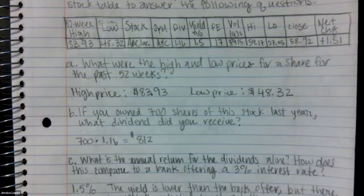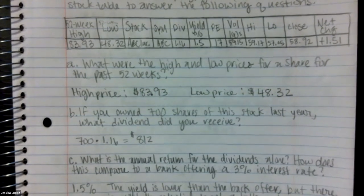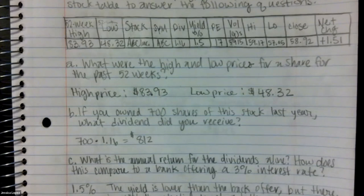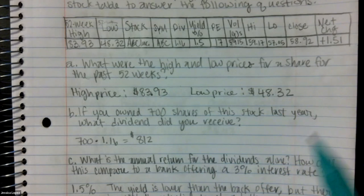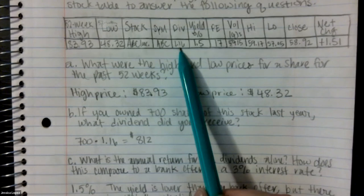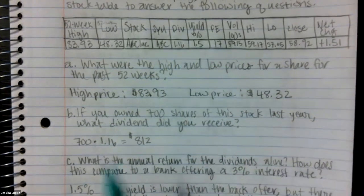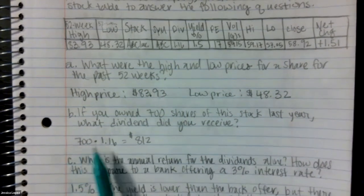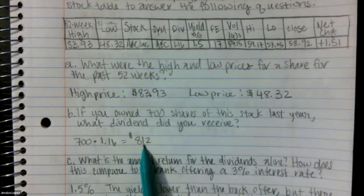For part B, it says if you own 700 shares of this stock last year, what dividend did you receive? So you go over to the dividend area — this is the multiplier for however many shares you have. Since I have 700 shares, I'm going to do 700 times 1.16, which turned out to be $812.